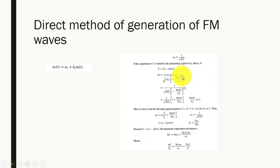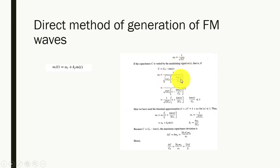When we put the value of C = C₀ − K·m(t), it becomes 1 / √(L·(C₀ − K·m(t))). Taking LC₀ common inside the square root, the equation becomes 1 / (√(LC₀) · √(1 − K·m(t)/C₀)), which is nearly equal to (1 / √(LC₀)) · (1 − K·m(t) / (2C₀)).